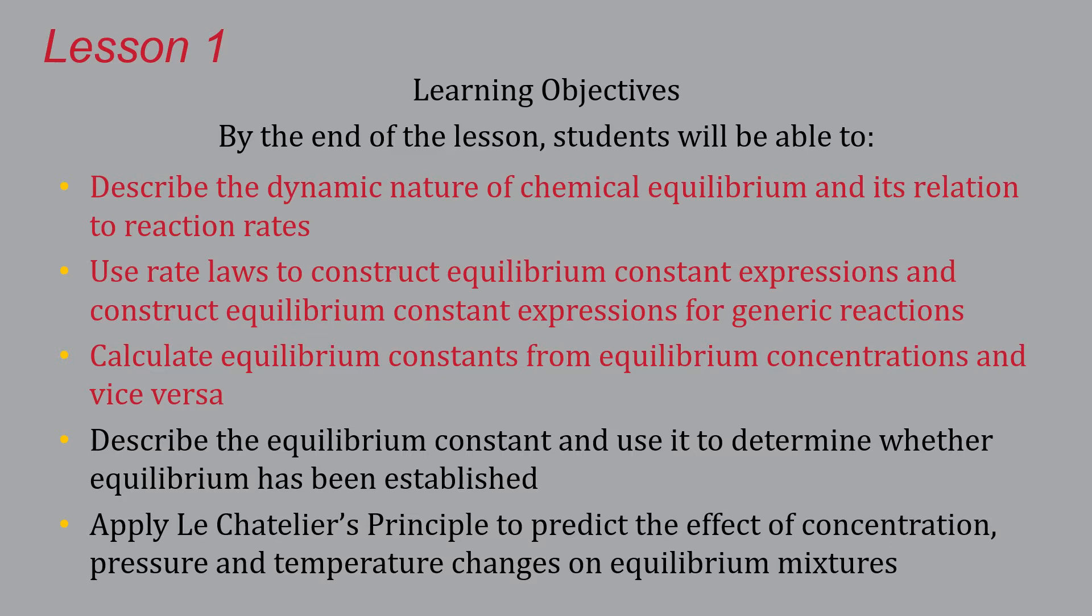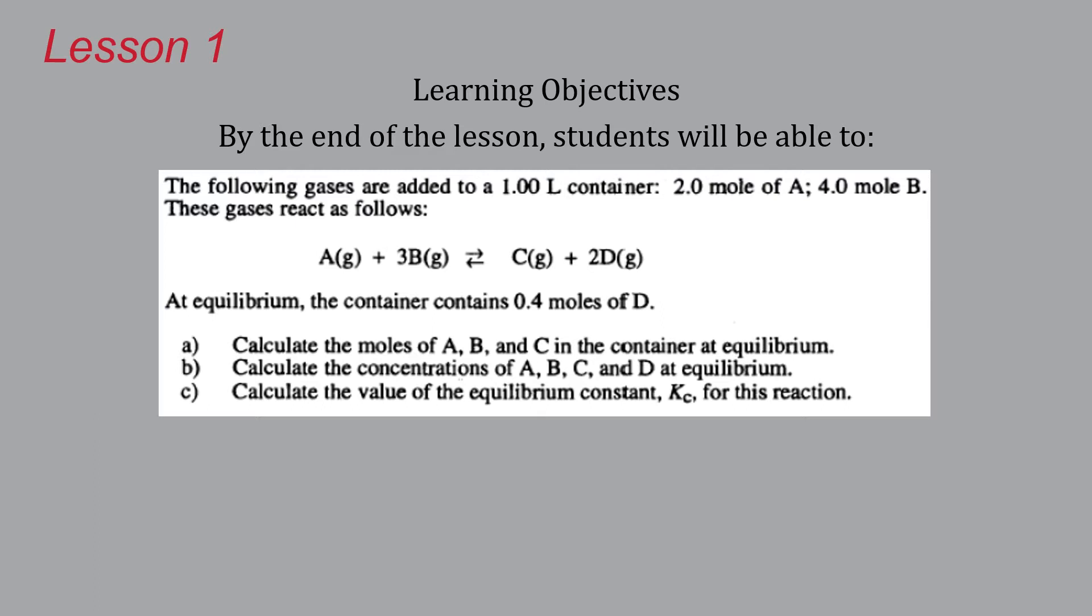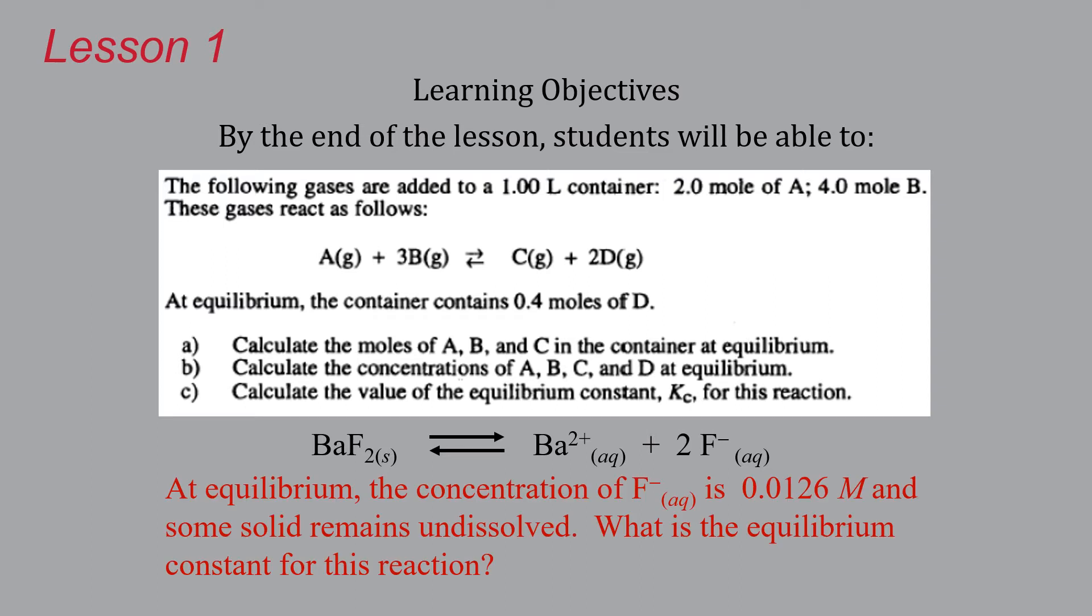By the time this lesson's over, this will make sense to you. We've got one liter container, two moles of A, four moles B. At equilibrium we have 0.4 moles of D, and you're going to tell me the equilibrium constant and how much of everything else is in there. Another thing we'll get to: barium fluoride, a sparingly soluble salt, dissolves into barium and fluoride ions. At equilibrium if the fluoride concentration is 0.0126 molar and there is some undissolved solid, what is the equilibrium constant for that reaction?